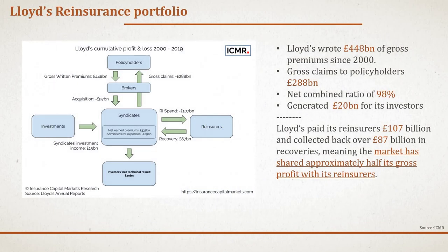Even though LORS is an old legacy system, it is extremely important for reinsurance business in Lloyd's of London because it manages transactions worth billions of pounds. An analysis from ICMR showed that roughly half of the gross profit generated in the Lloyd's market over the last two decades has been shared with reinsurers. From 2000 to 2019, Lloyd's wrote approximately 448 billion pounds of gross premiums.